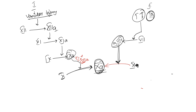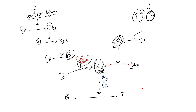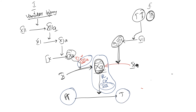Now we are going further. We have to convert prothrombin to thrombin. We will use the activated factor 10A to convert prothrombin to thrombin. But here again, only factor 10A is not enough — we also need phospholipids, calcium ion, and activated factor 5. In the intrinsic pathway, activated factor 8 was needed; here activated factor 5 is needed. With these four components, we convert prothrombin to thrombin.